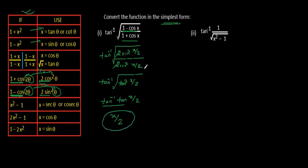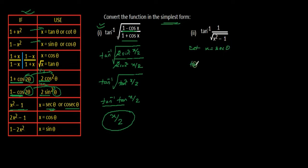Tan inverse tan will be 1, so the answer will be x by 2. This is the simplest form of this given inverse trigonometric function. Now coming to the next question: tan inverse 1 by square root of x square minus 1. Here we are having x square minus 1, so we can use either sec theta or cosec theta. I am going with x equal to sec theta. You can go through cosec theta also. Tan inverse will be same as it is: 1 by square root of sec square theta minus 1.